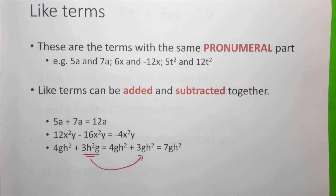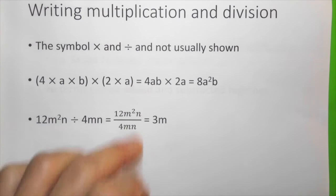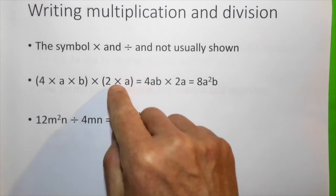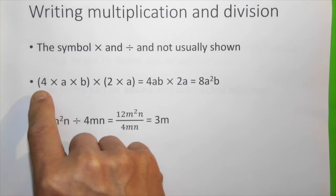When we write multiplication and division for an expression, we don't actually show the multiplication and division symbols. For example, 4 times a times b times 2 times a. We can rewrite that as 4ab times 2a. Then we multiply both together, 4 times 2 gives us 8 and ab times a gives us a squared b. Therefore, this expression becomes 8a squared b.